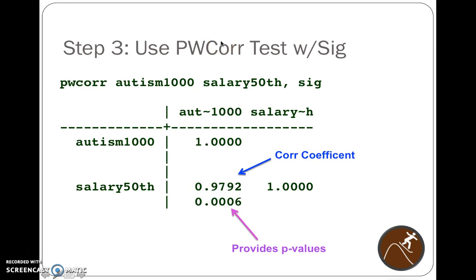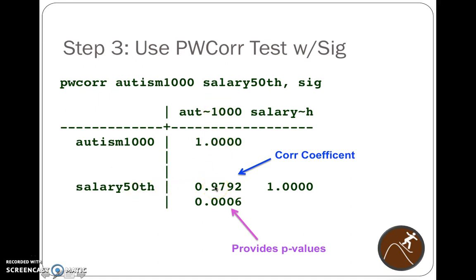When we use the Pearson correlation test and want the significance value, we use pwcorr autism_1000, which is our first variable, then salary_50th as our second variable, then comma SIG for significant or not. It does the correlation test. Autism is perfectly correlated with itself as you would expect, but salary 50th versus autism shows almost a perfect correlation of .9792. A value of 1.000 is a perfect correlation, and we get a p-value of .0006, which is definitely statistically significant.